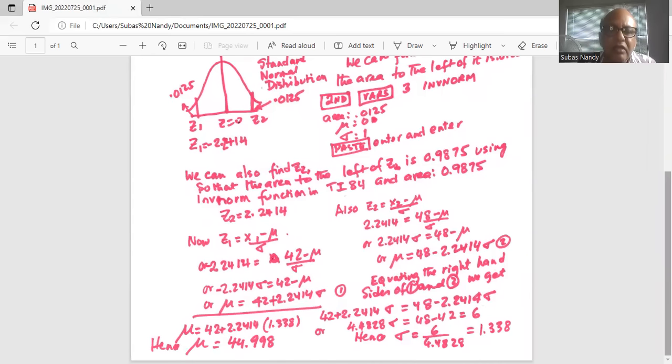We take this value of sigma and substitute it in equation 1. So mu equals 42 plus 2.2414 times 1.338, and mu works out as 44.998.